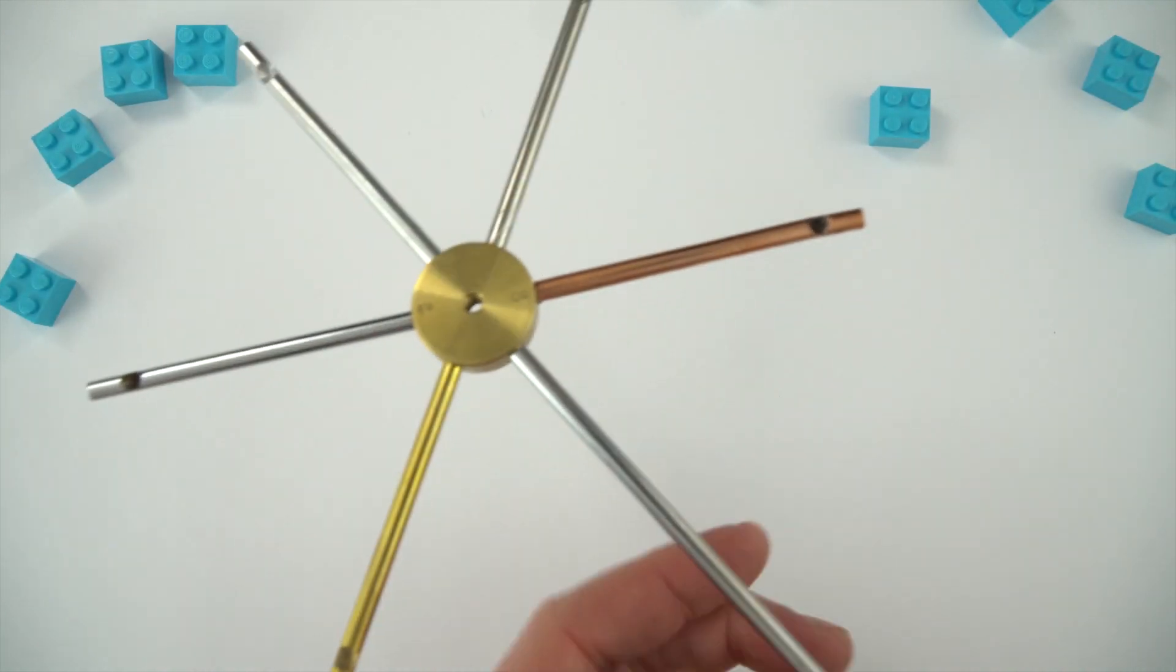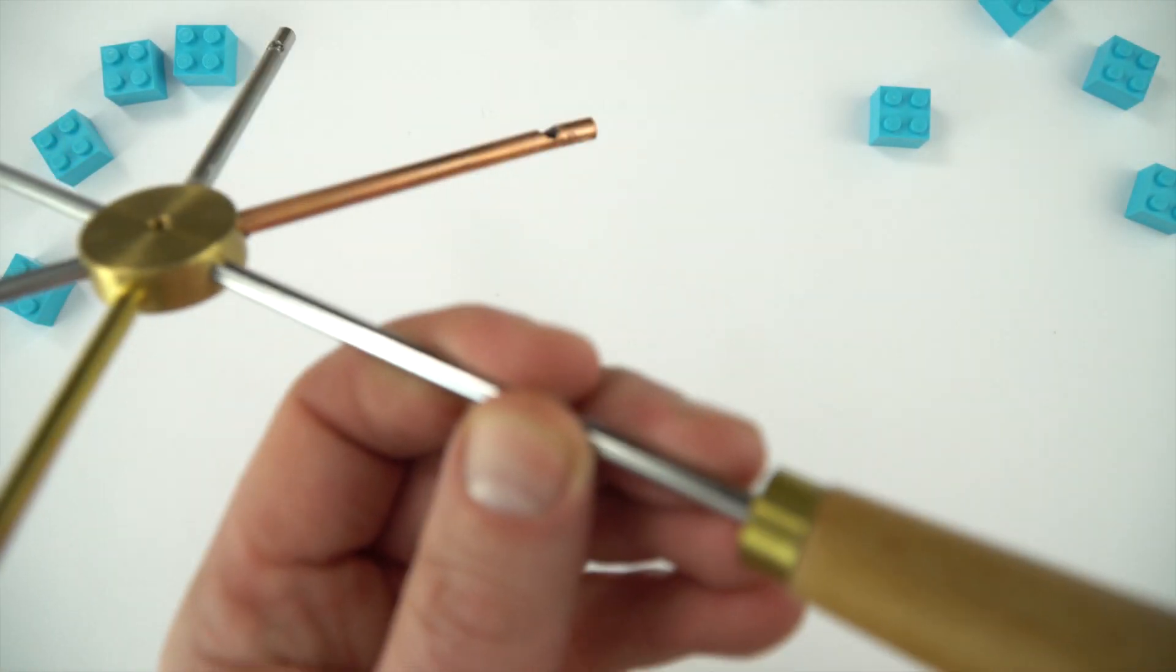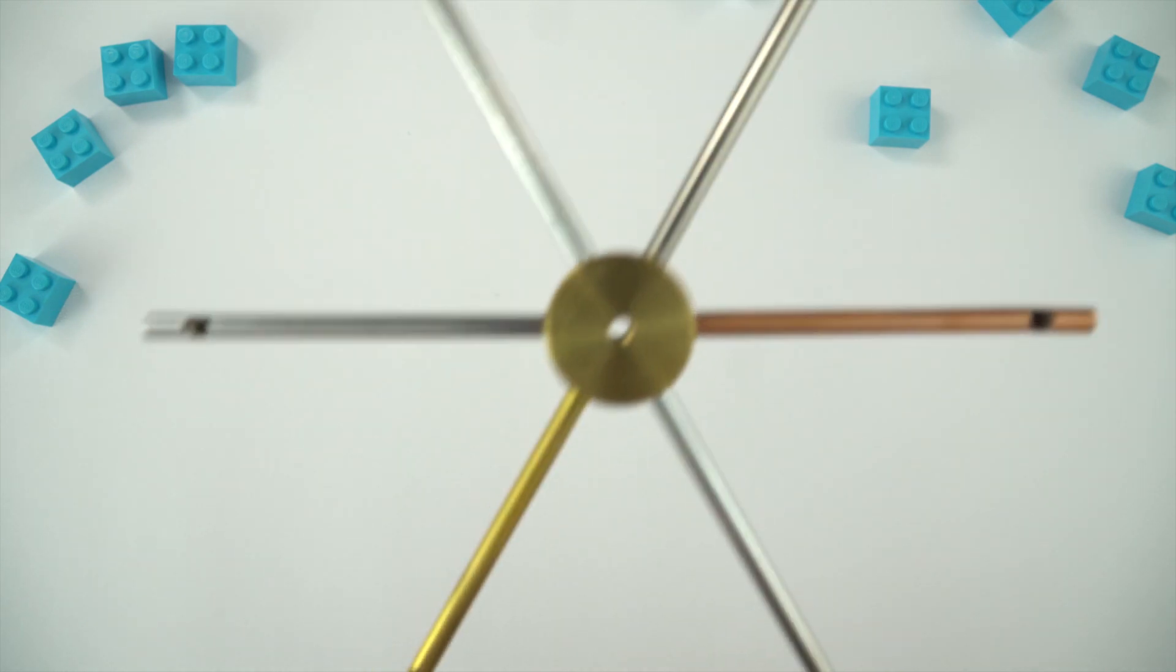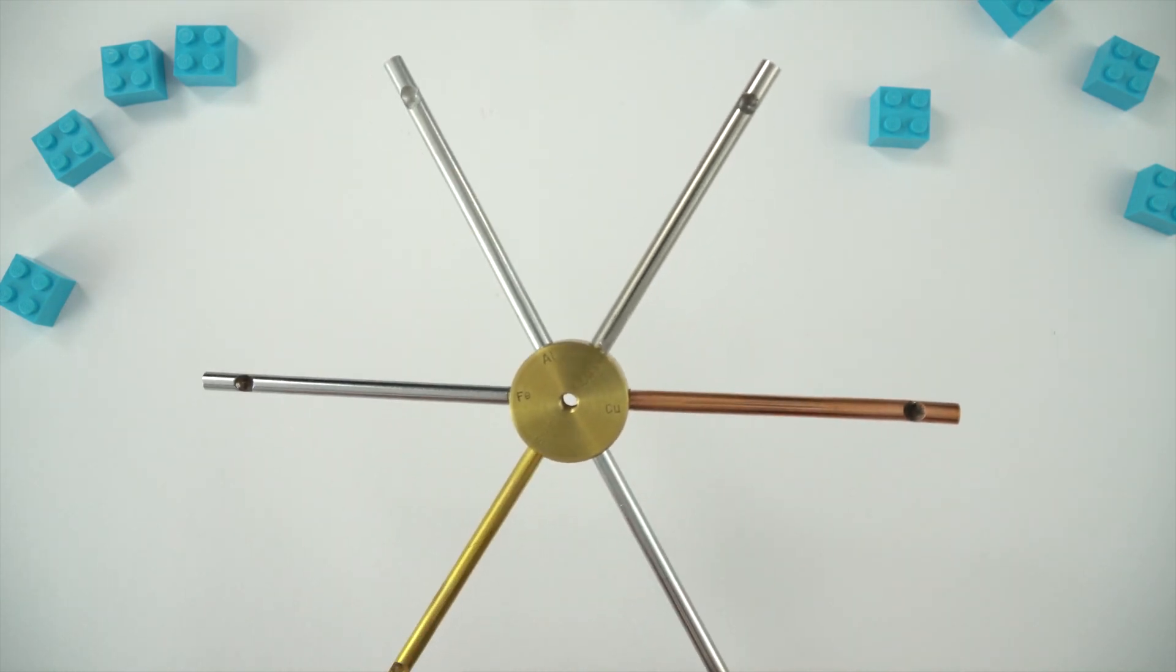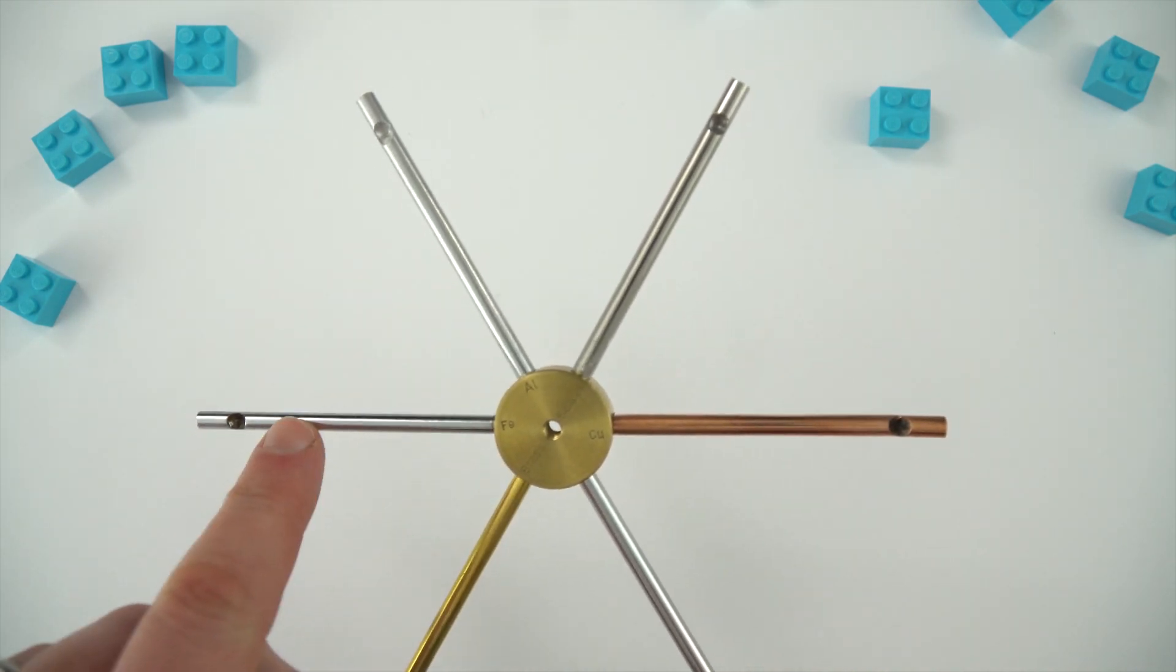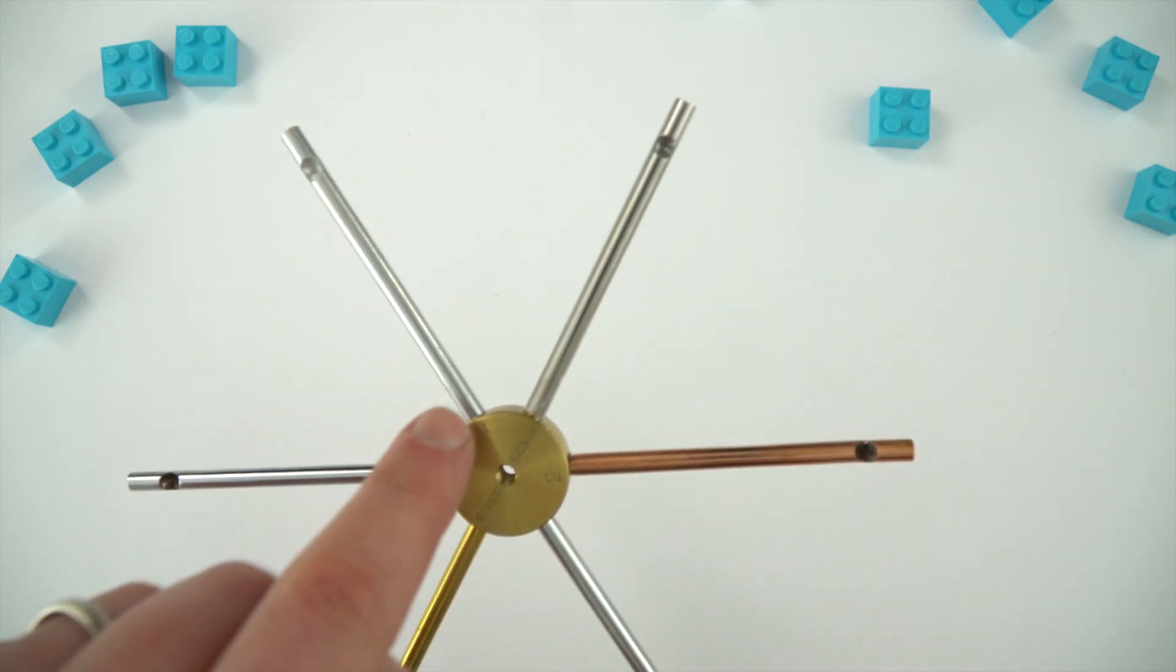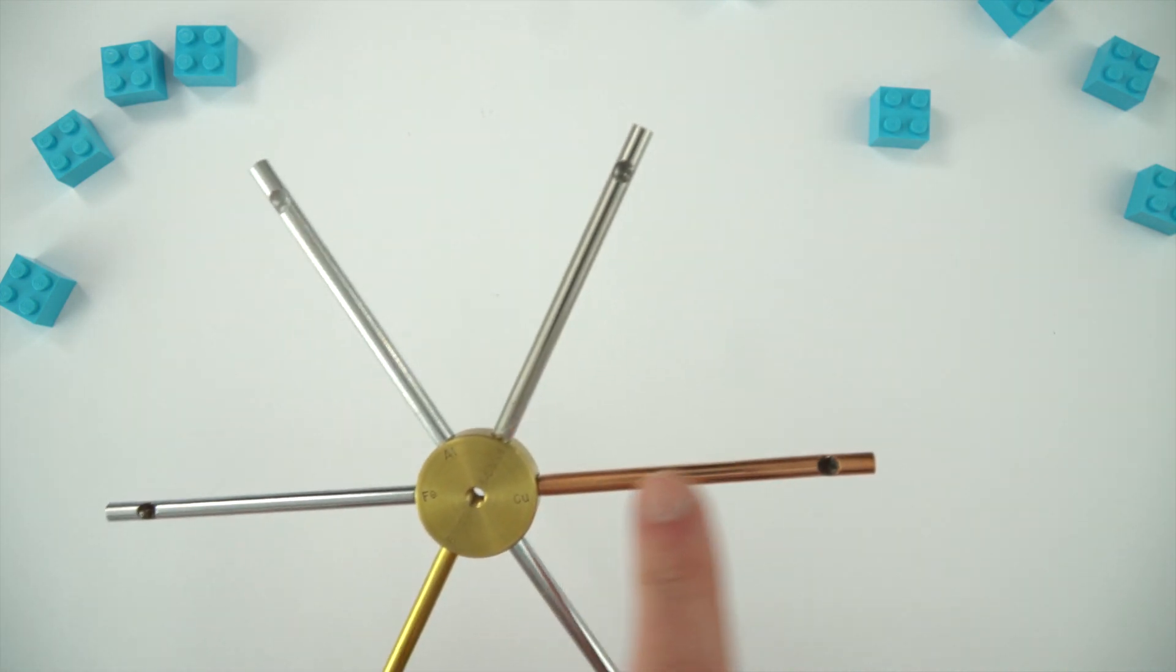So, this is the conducting star, and there are five different metals and just a handle to hold it over here. So what we have is, this one is brass, we've got iron, we've got aluminium, we've got some stainless steel, and then finally some copper.